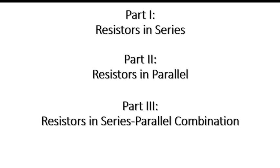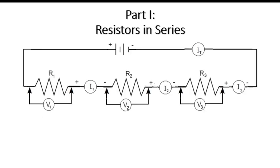This experiment has 3 parts. Part 1 is resistors in series connection. Part 2 is resistors in parallel connection. And Part 3 is resistors in series and parallel connections. For Part 1, you will be connecting 3 resistors — R1, R2, and R3 — in series connection.